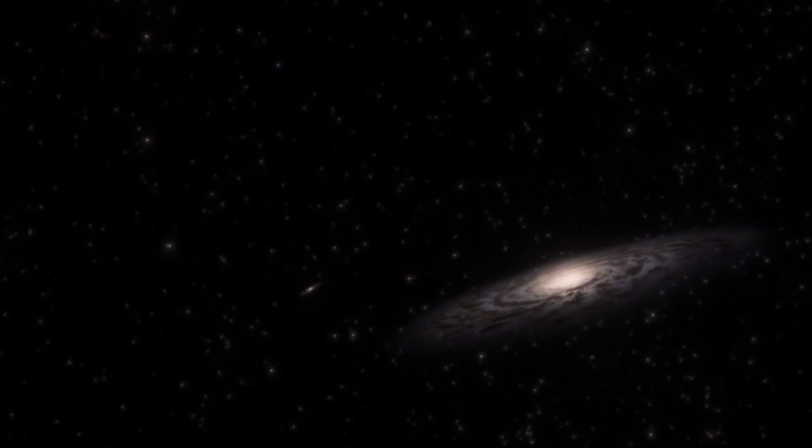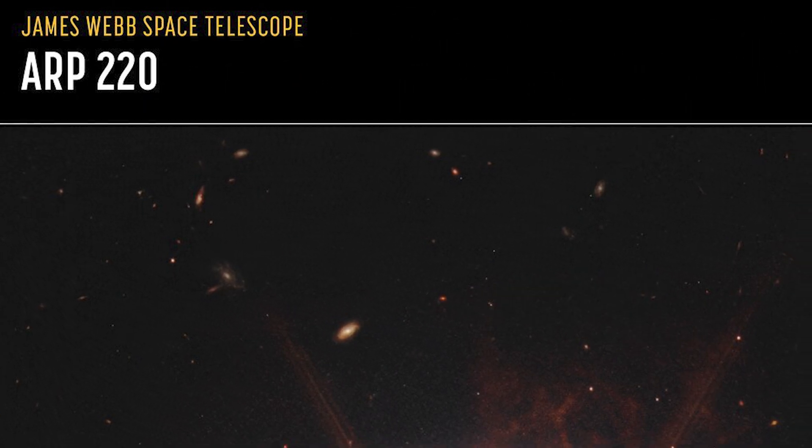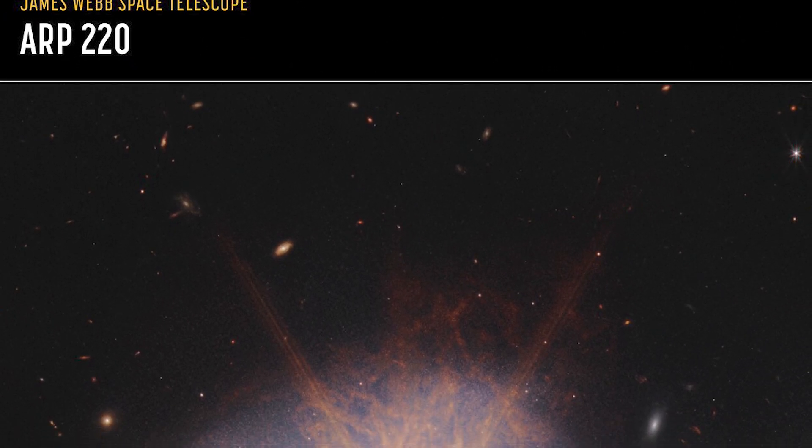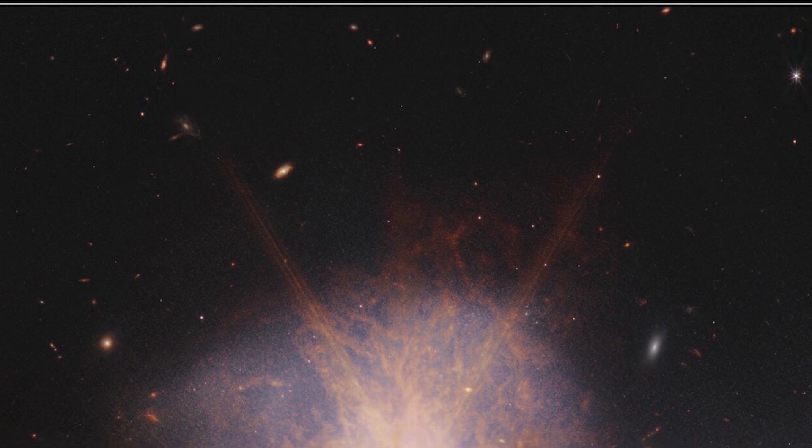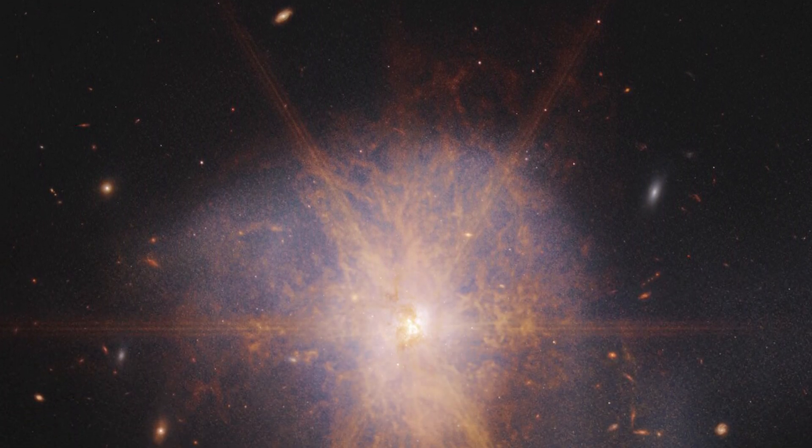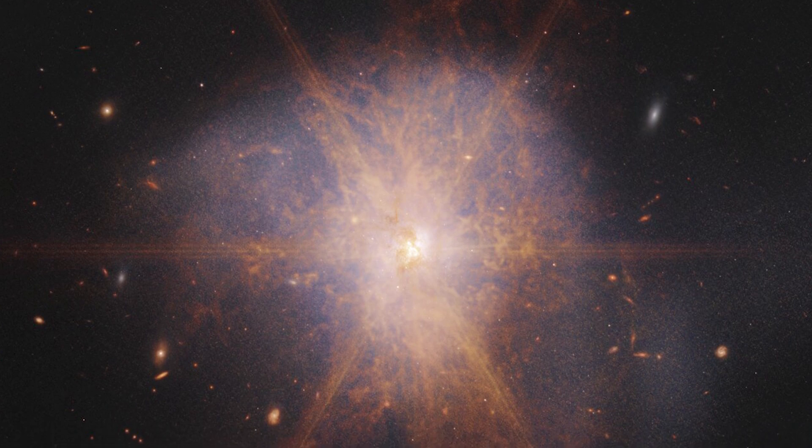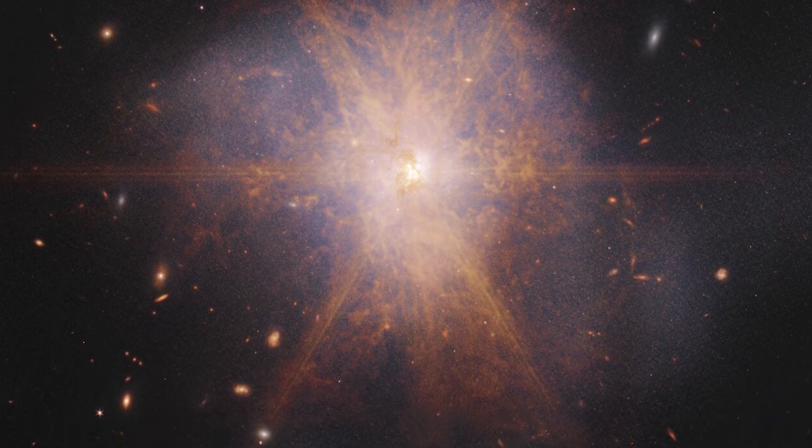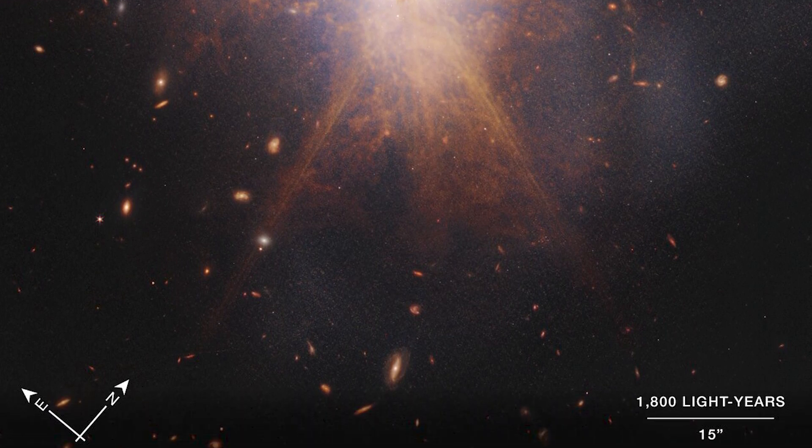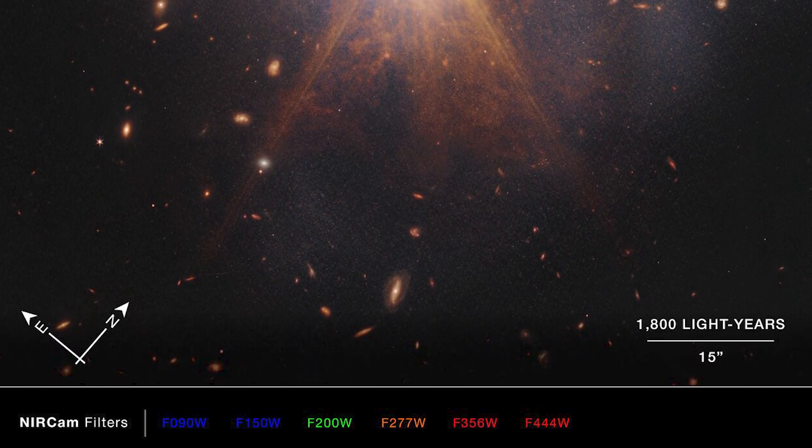NASA has made an exciting announcement about the galactic merger ARP 220, which was captured by the James Webb Space Telescope. This impressive galactic merger can be seen shining among other galaxies in the night sky. When two spiral galaxies merge, the phenomenon known as ARP 220 shines brightest in the infrared, making it perfect for observation by the James Webb Space Telescope.